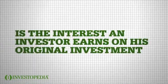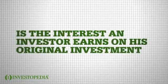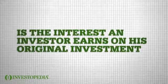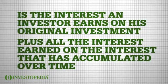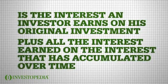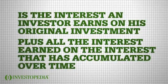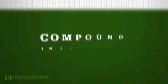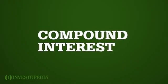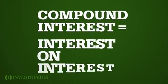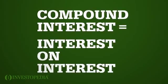Compound interest is the interest an investor earns on his original investment, plus all the interest earned on the interest that has accumulated over time. It is easier to think of compound interest as interest on interest.